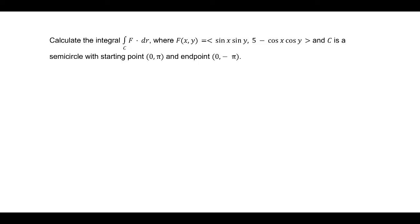First, let's find a potential function by taking the antiderivative with respect to x and y for each of these components. A potential function is f(x,y) = -cos x sin y + 5y - sin y.